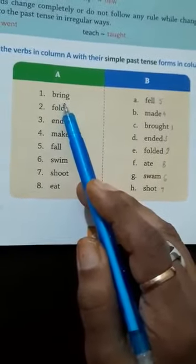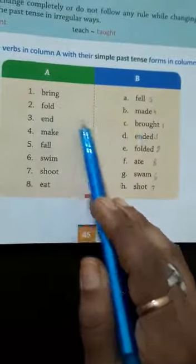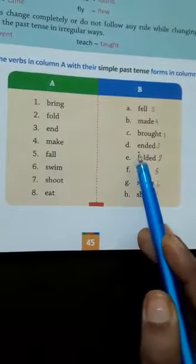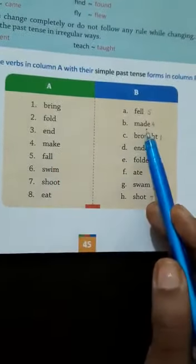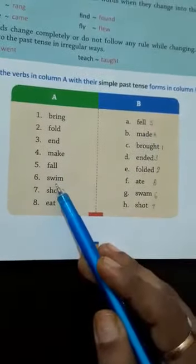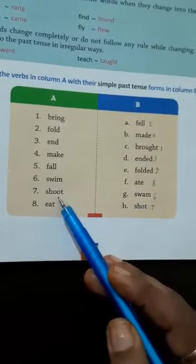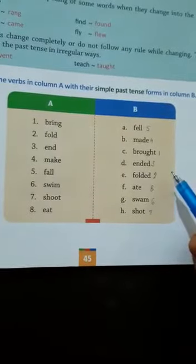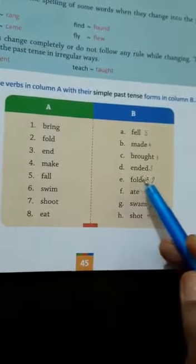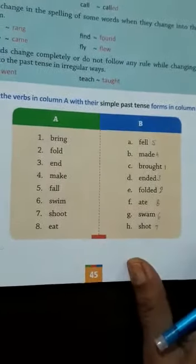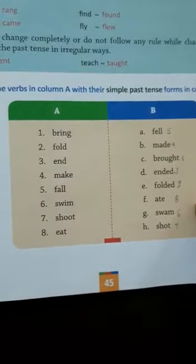Bring, brought. Fold, folded. End, ended. Make, made. Fall, fell. Swim, swam. Shoot, shot. Eat, ate. You can see here, in this way you will change verbs in simple past tense. There should be a lot of practice and you will learn verbs to change to past tense.